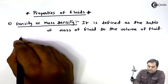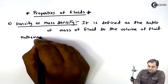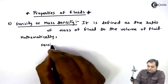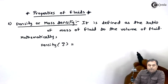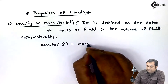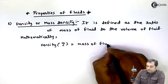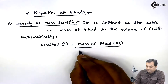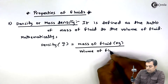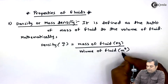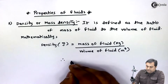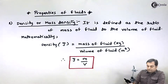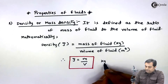Mathematically, the term density is denoted by rho. It is equal to the mass of fluid in kg divided by the volume of fluid in meter cube. So density, denoted by rho, is equal to mass upon volume, and the unit is kg per meter cube.